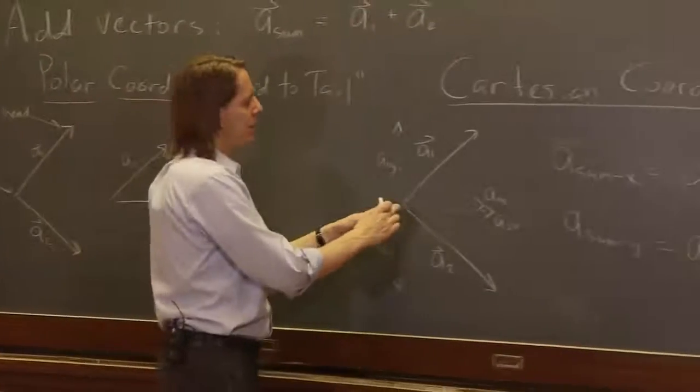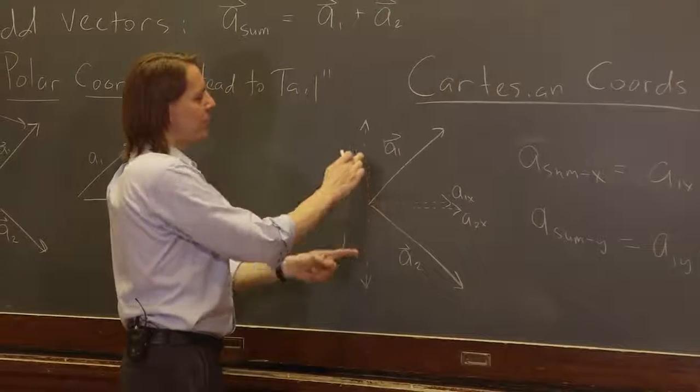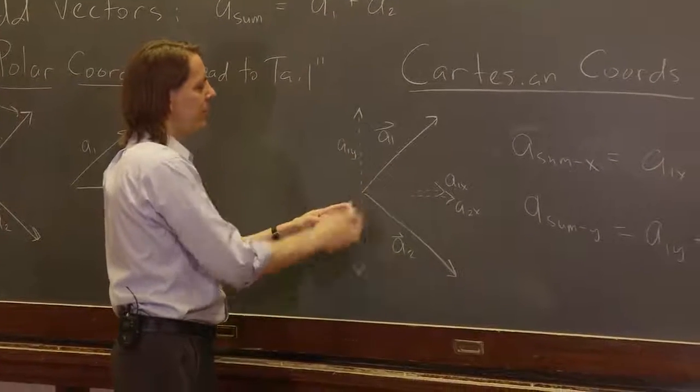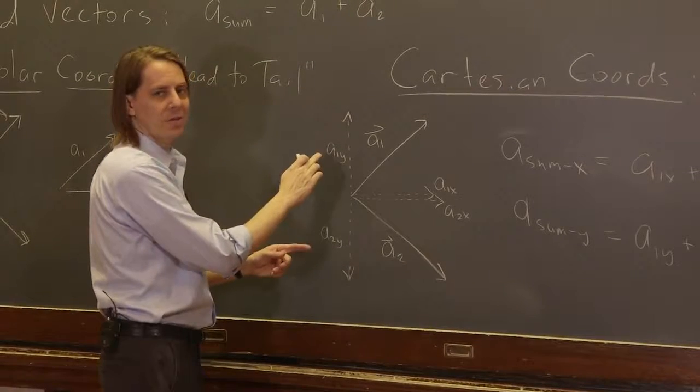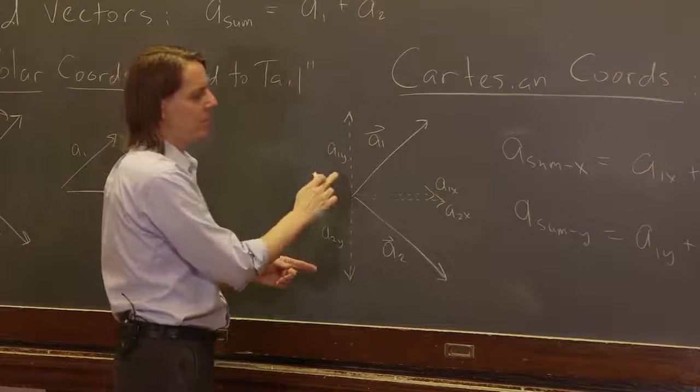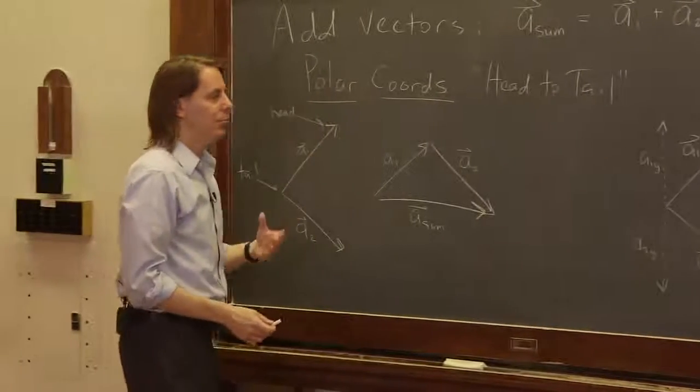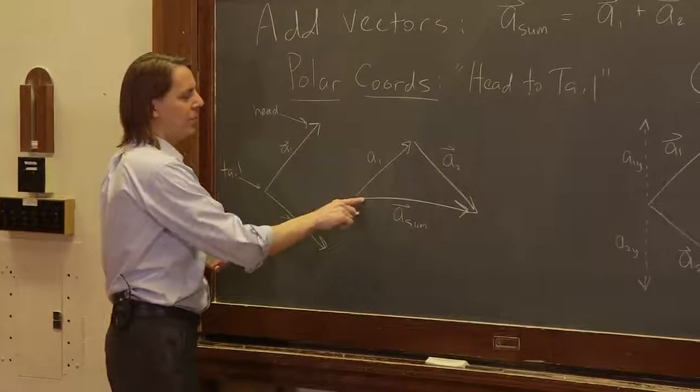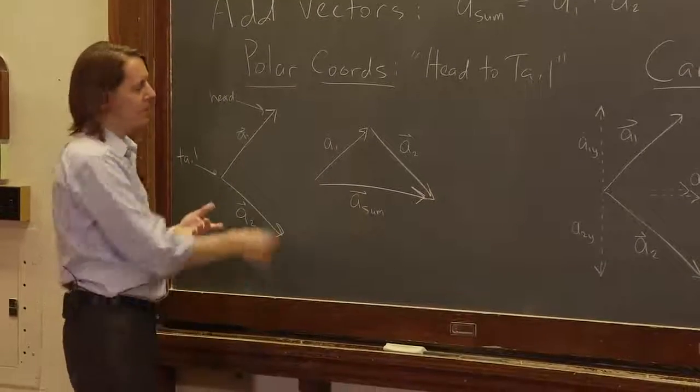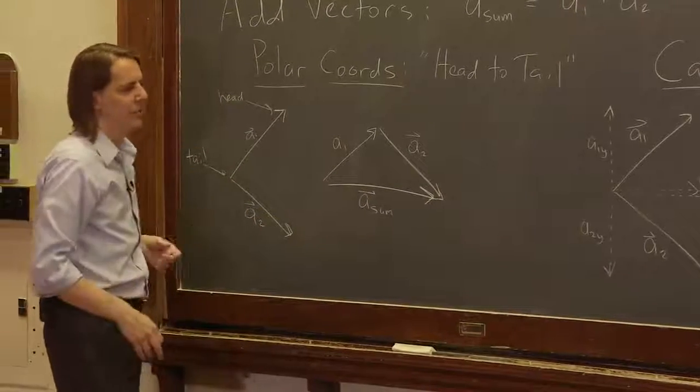In the y direction, these two numbers, remember these are really scalars, these components. One is positive and one is negative. So when you add these, it would actually cancel. They're about the same size in their opposite directions. So a2y would be a negative number. They'd pretty much cancel, give you pretty much nothing. And sure enough, the sum has essentially no y component. It's pretty much flat because the y component's canceling.